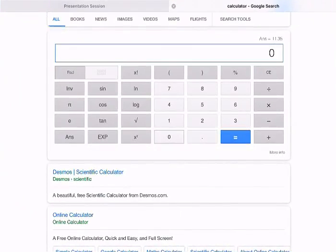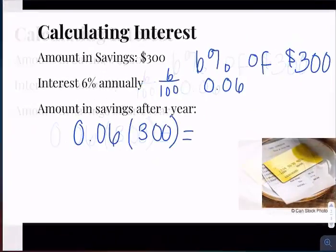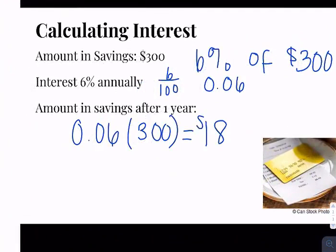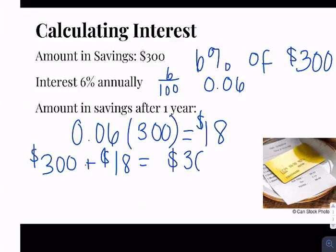So 0.06 times 300. And we get $18. So we're going to earn $18 that first year. So then how much do we have total after we've earned that $18? So we have $300 plus $18. So our total after one year is $318 after one year.